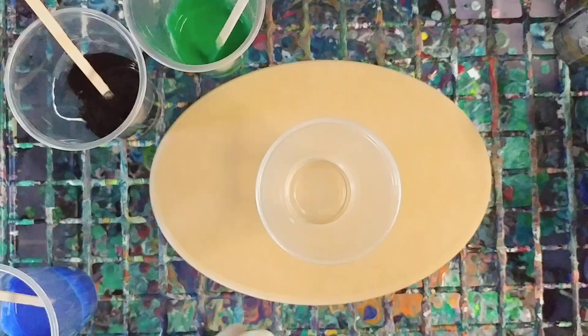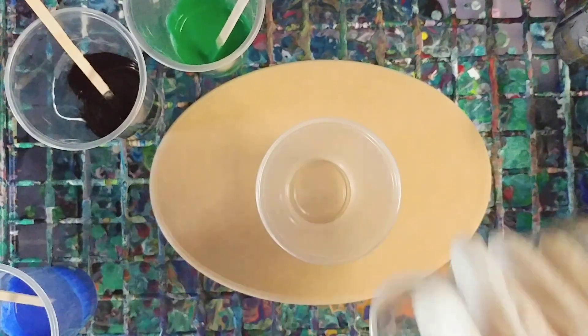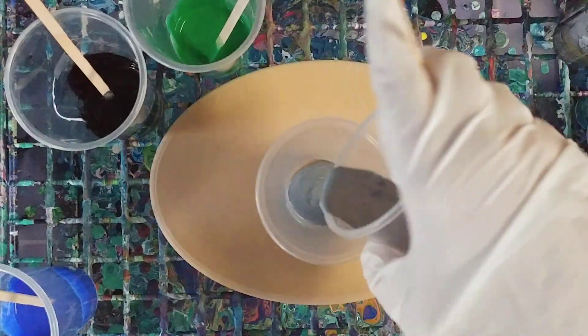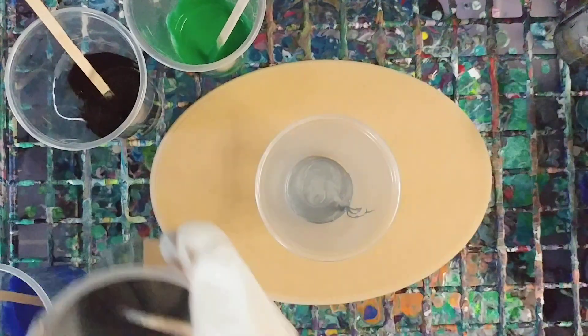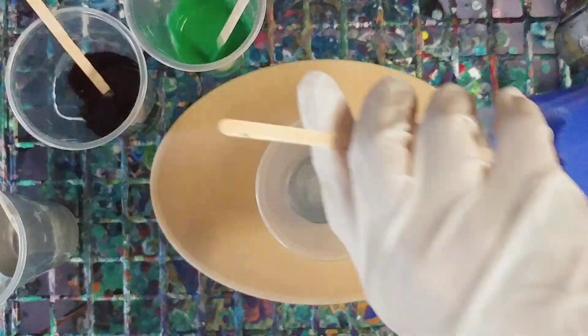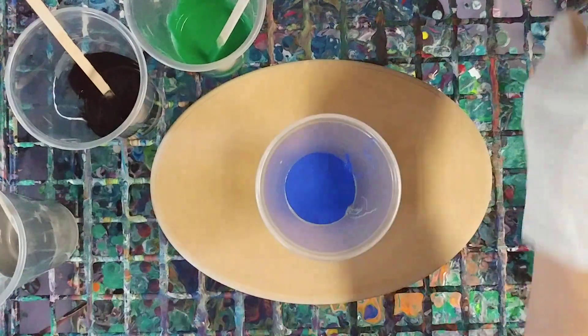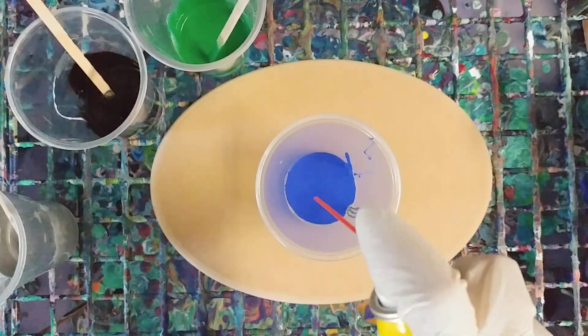So we're going to go ahead and start with this. In these cups is the craft glue, the craft paint, and then just a tiny bit of water. I'm going to spray this once in here.